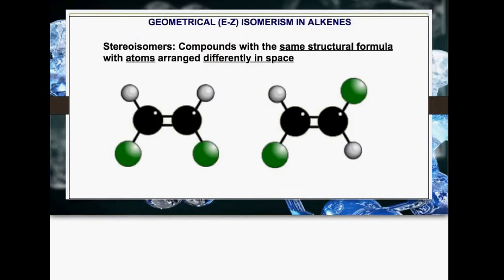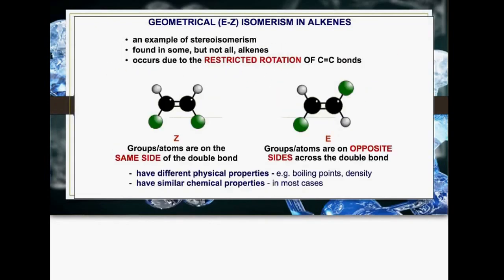In previous past papers, they have asked you to define what stereoisomers are. Stereoisomers are compounds with the same structural formula, but with atoms arranged differently in space. Z is when the groups are on the same side, E is when they're on opposite sides.